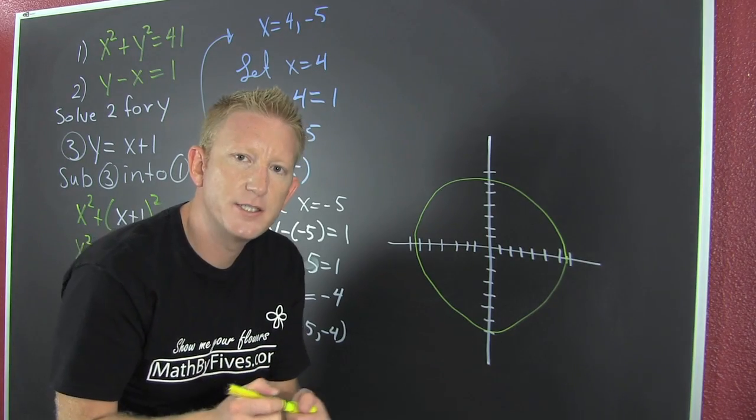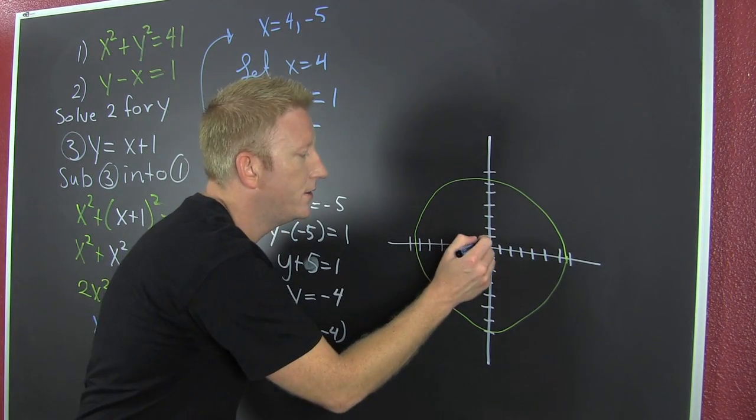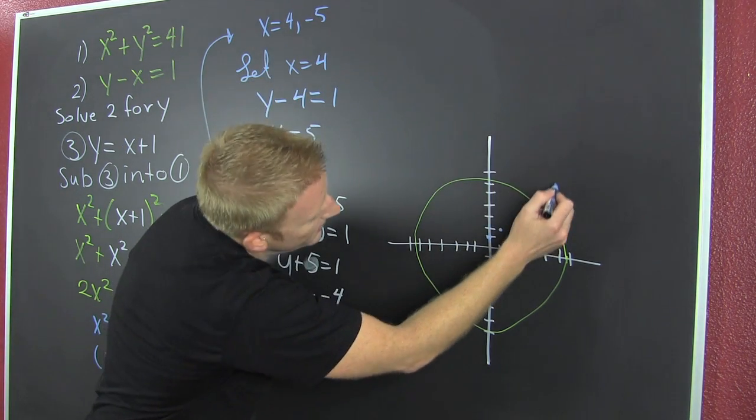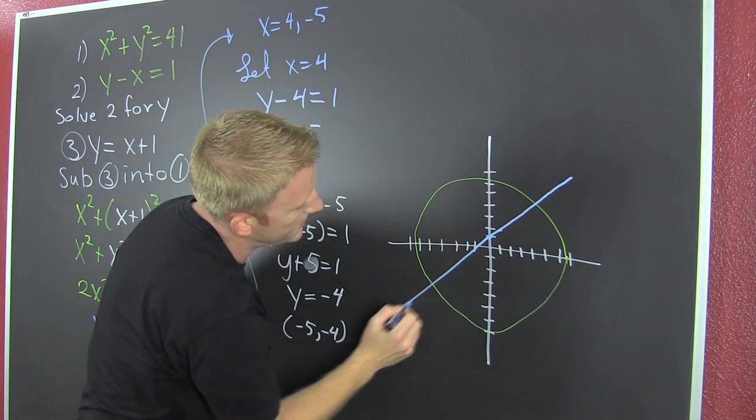And now I'm going to sketch that line. It starts at 1. And then it goes up 1 over 1. And then I connect the dots. Connect the dots.